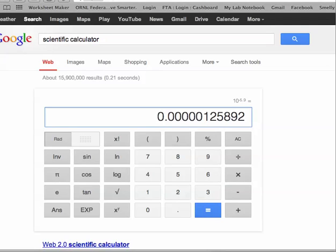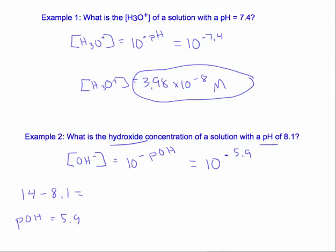This one is not given to us in scientific notation, but we can easily put it in there if we would like. So we move our decimal 1, 2, 3, 4, 5, 6. We have 1.26. That's 10 to the negative 6.